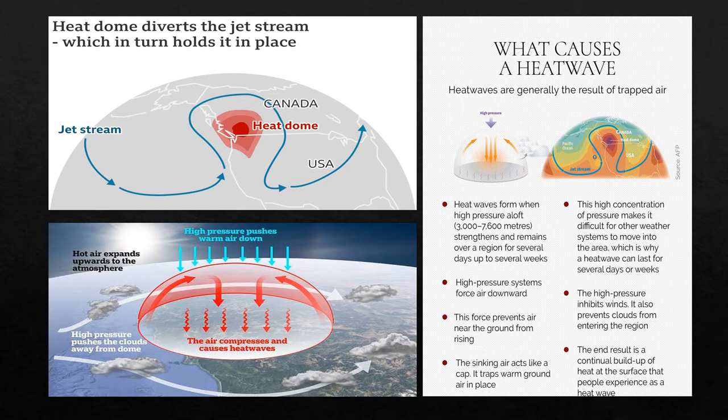The high pressure has been created downwards, and a cloud-free zone is created. Clouds normally act as an insulator from heat, but in this case the clouds have been displaced. Where the dome has formed, no clouds remain in that area, so there is an inflow of heat from the Sun, and the dome shape purposely traps more heat inside.